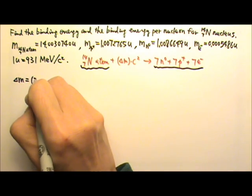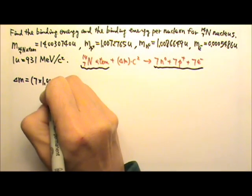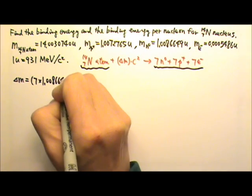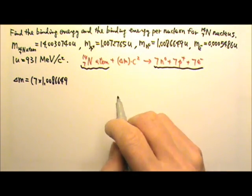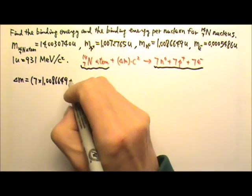So I am going to do this: 7 neutrons, 7 times the mass of a neutron, 1.0086649, and I am just going to leave the U out and then put it in later, plus 7 protons, 7 times 1.0072765.